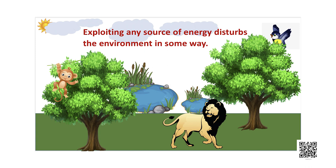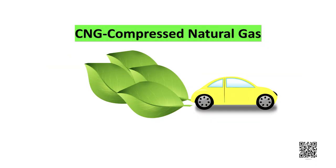We have studied various sources of energy in the previous sections. Please remember that exploiting any source of energy disturbs the environment in one way or another. The source we choose depends on factors such as the ease of extracting energy from that source, the economics of extracting energy, the efficiency of the technology available, and the environmental damage that can be caused. We have started using relatively clean fuels like CNG, that is compressed natural gas, but they have their own set of disadvantages. Burning fossil fuels causes air pollution.